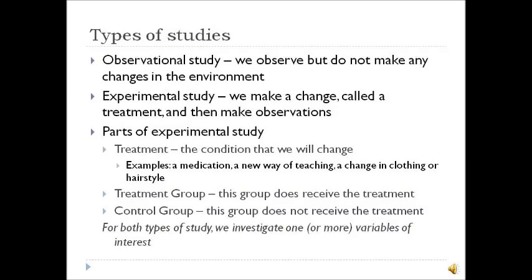In an experimental study, we make a change — this is called a treatment — and then we make observations around it. The parts of an experimental study are the treatment, the treatment group, and the control group. The treatment is the condition that we will change. You could change a medication people are receiving, the way a course is taught, or even look at an experiment in which people change their clothing or hairstyle to see how that affects how others respond to them. The group who makes or has the adjustment made is called the treatment group.